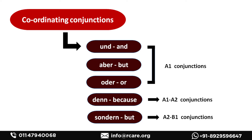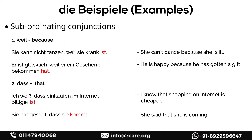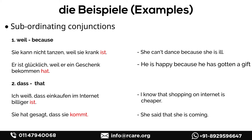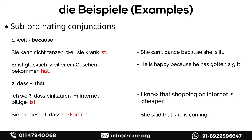Now we move to examples of subordinating conjunctions. The main thing to remember is that when using a subordinating conjunction, the verb has to be at the end. We have marked the verbs in red bold letters so you can identify them. The first conjunction is 'weil' (because): 'Sie kann nicht tanzen, weil sie krank ist' — she can't dance because she is ill. 'Er ist glücklich, weil er ein Geschenk bekommen hat' — he is happy because he has gotten a gift. As you can see, 'ist' and 'hat' are at the end.